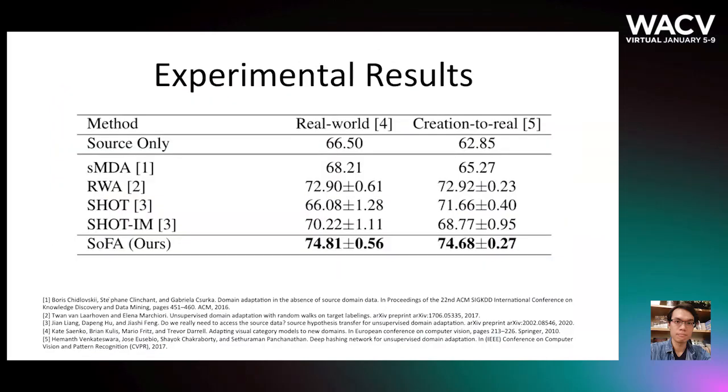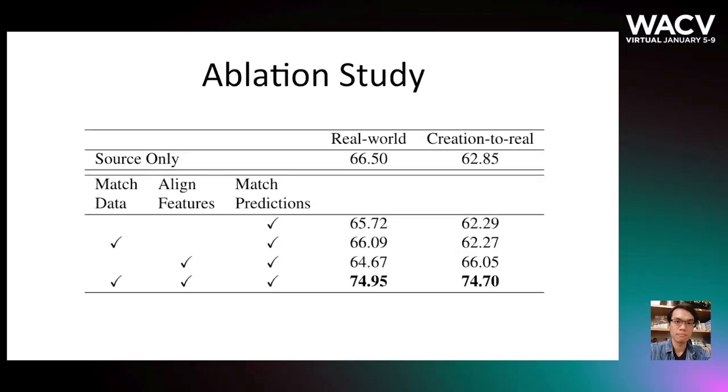Here we summarize the experimental results on two UDA classification tasks. The results show that SOFA achieves higher average accuracy than the existing methods. We also conducted ablation studies on SOFA by removing parts of the objective. From the results, we verified the importance of feature alignment to the classification accuracy.